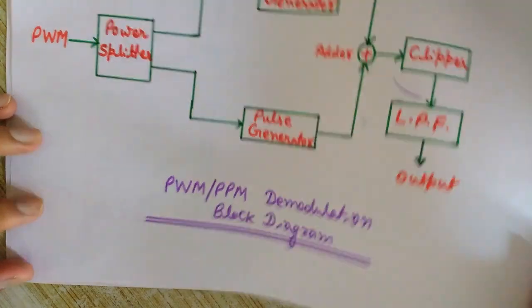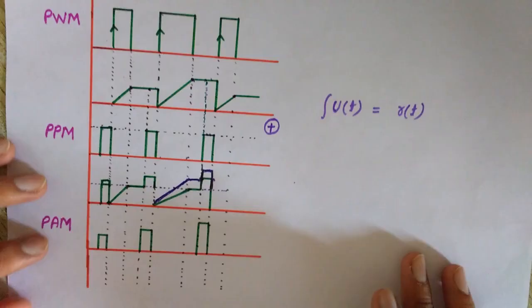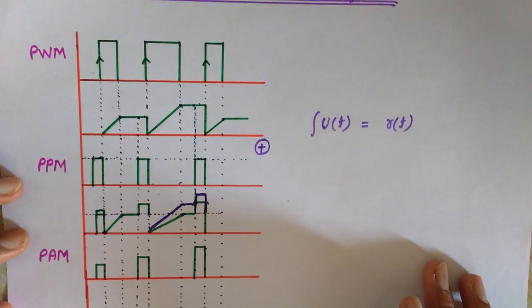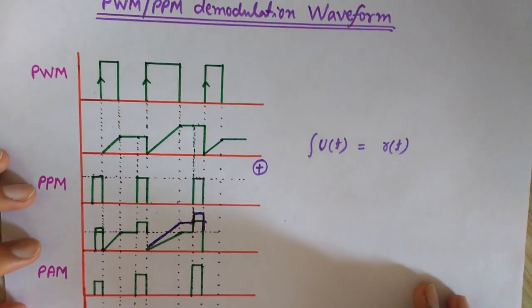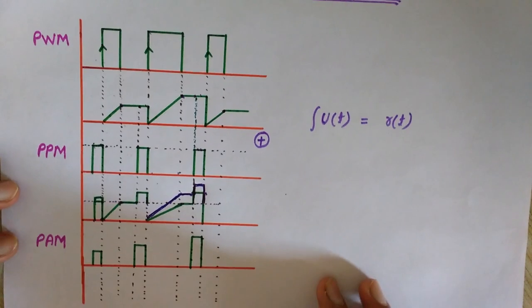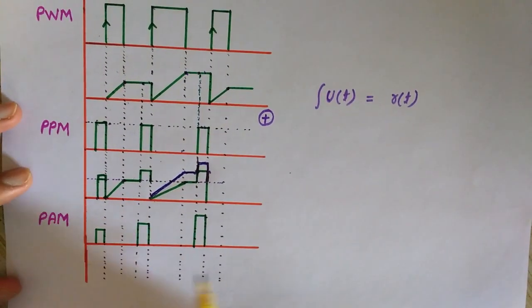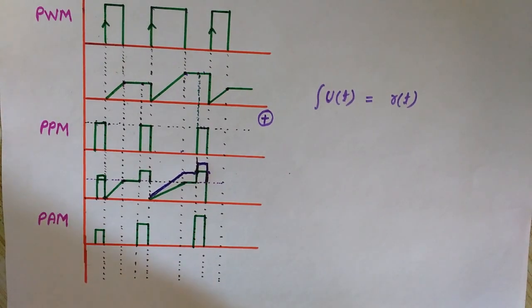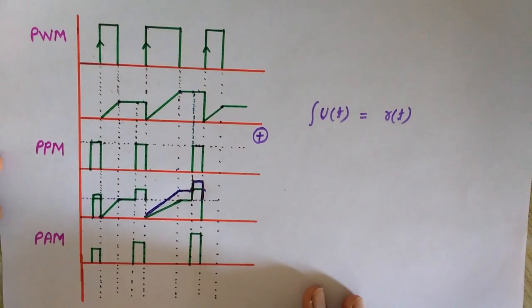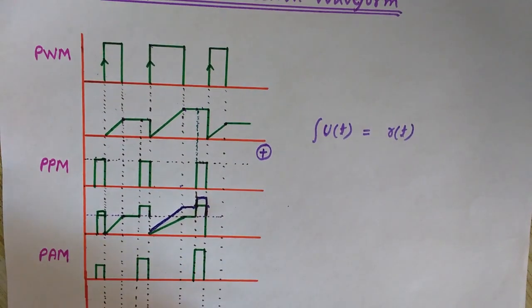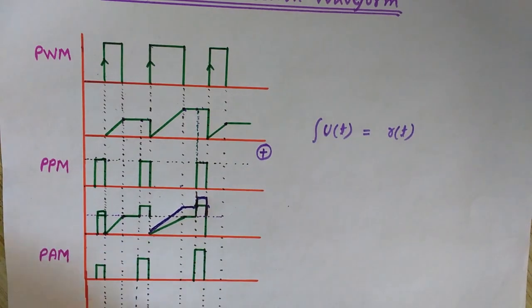So in this way we get the message signal. To demodulate a PWM or PPM signal, first we convert it into a PAM signal, and then pass this PAM signal through a low pass filter (LPF) to get the message signal back. I hope you got this point. In the next video we will see another concept related to modulations.